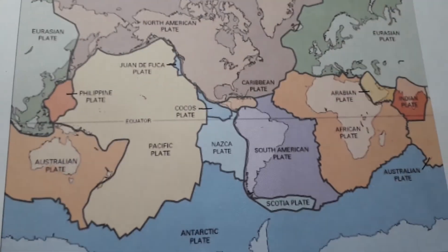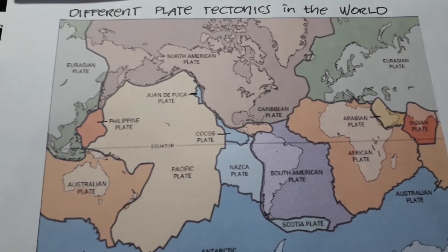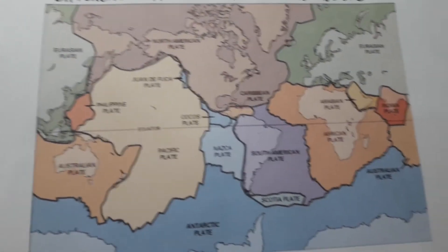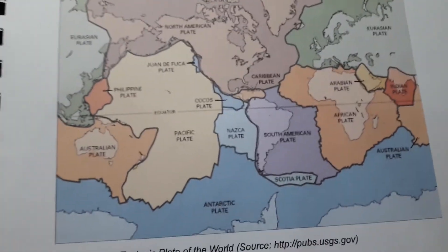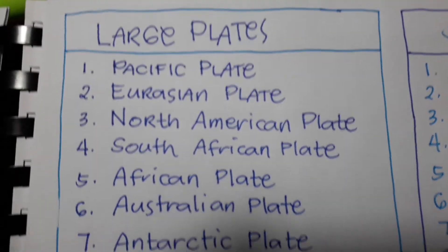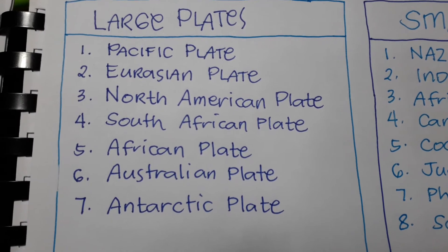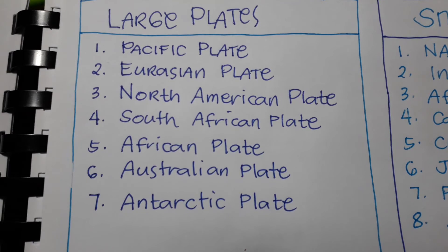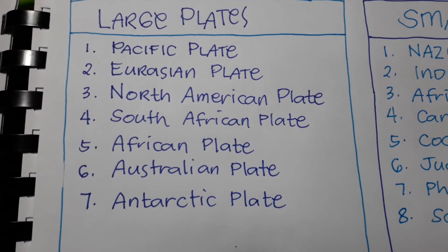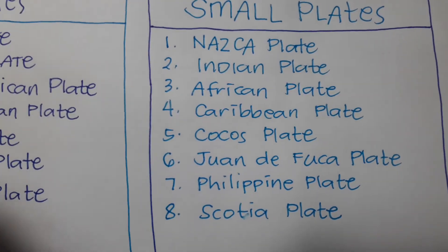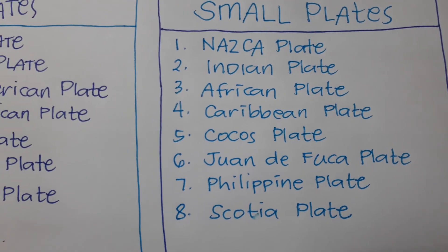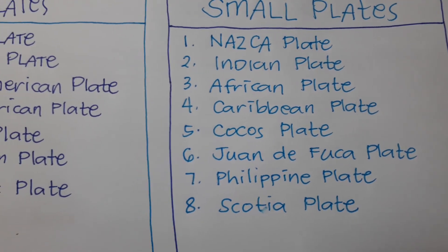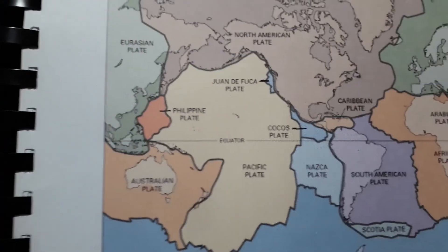So kung pag-iisipan natin, makahati natin ito sa dalawa — malalaking plates at maliliit na plates. Ang malalaking plates ay: Pacific plate, Eurasian plate, North American plate, South African plate, African plate, Australian plate, at Antarctic plate. Yung maliliit na plates — walo po tayo: Nazca plate, Indian plate, African plate, Caribbean plate, Cocos plate, Juan de Fuca plate, Philippine plate, at Scotia plate. I-post nyo na lang po ang video para hanapin nyo ulit para mahimay-himay nyo ang ating mapa ng plate tectonics.